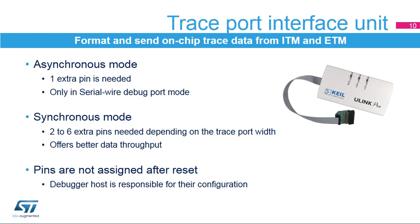The Trace Port Interface Unit formats information from the on-chip trace units, ITM and ETM, and sends them to the debugger host. It supports asynchronous mode with one pin used for communication in single-wire mode, or synchronous mode with up to five pins working in both JTAG and single-wire modes. Synchronous mode provides better data throughput. After a device reset, these pins are not assigned and must be configured by the debugger host.